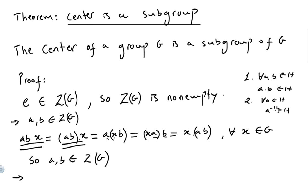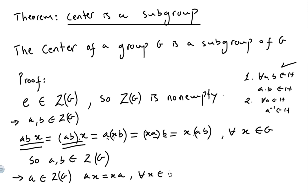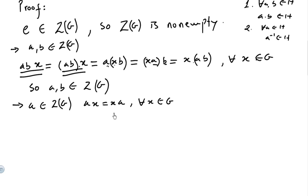Now we have to check the second condition. We assume that A is in the center, so A times X equals X times A for all X in G. We want to prove that for any element in the center, its inverse is also in the center. This is the two-step subgroup test.